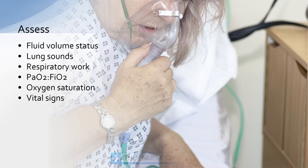When assessing our patient for respiratory problems, we want to look at a number of different things. First, fluid volume status — what is the patient's overall fluid volume? That could give us a cue as to whether there might be fluid building up in the lungs if the patient is over-hydrated. On the other hand, we're probably not going to see pulmonary edema if the patient is dry. We also want to listen to our lung sounds. If you're unfamiliar with lung sounds or want to review them, make sure you watch our video on assessing lung sounds.